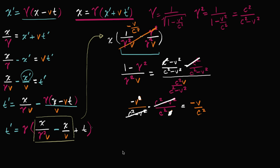So we're in the home stretch. This expression, t prime, is going to be equal to gamma times t, and then this x expression has simplified to negative v over c squared times x, so we can write it as minus v over c squared times x. And we're done — we have just completed our Lorentz transformation. We carefully did a little bit of hairy algebra to get this result: t prime is equal to gamma times (t minus v over c squared times x).